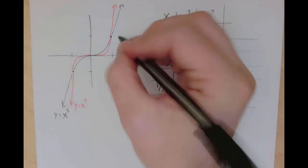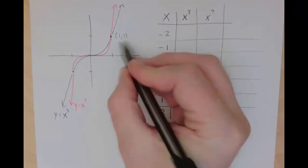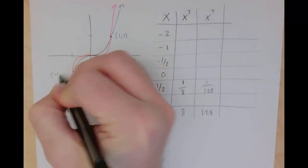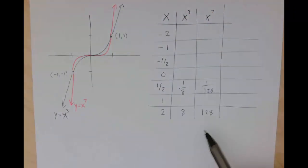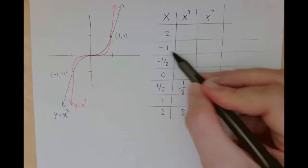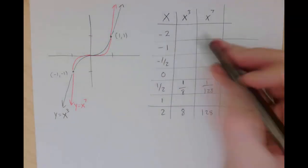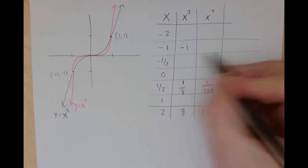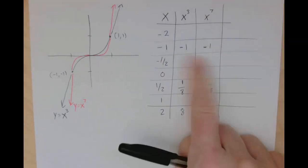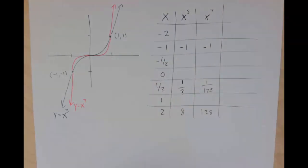Again, just like last time, we have the points 1, 1, and negative 1, negative 1 common between all the graphs, because if I have negative 1 times itself an odd number of times, the output is always negative 1, no matter how many times I multiply it by itself, as long as it's odd. And 1 times itself an odd number of times is 1, so that's why those points are in common.